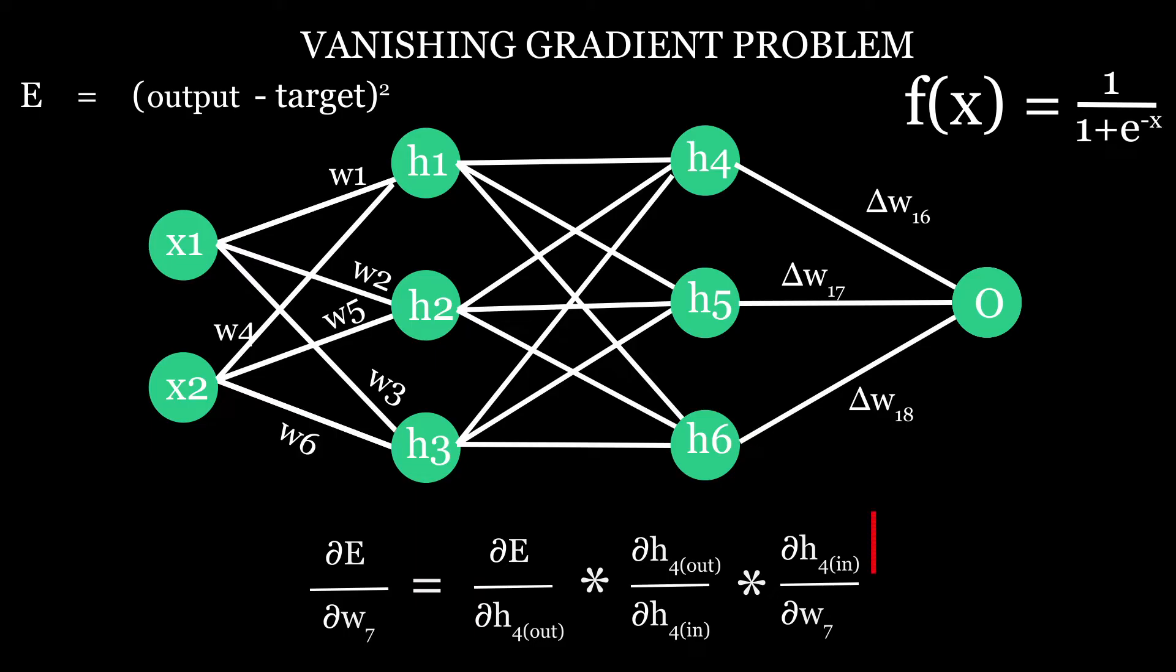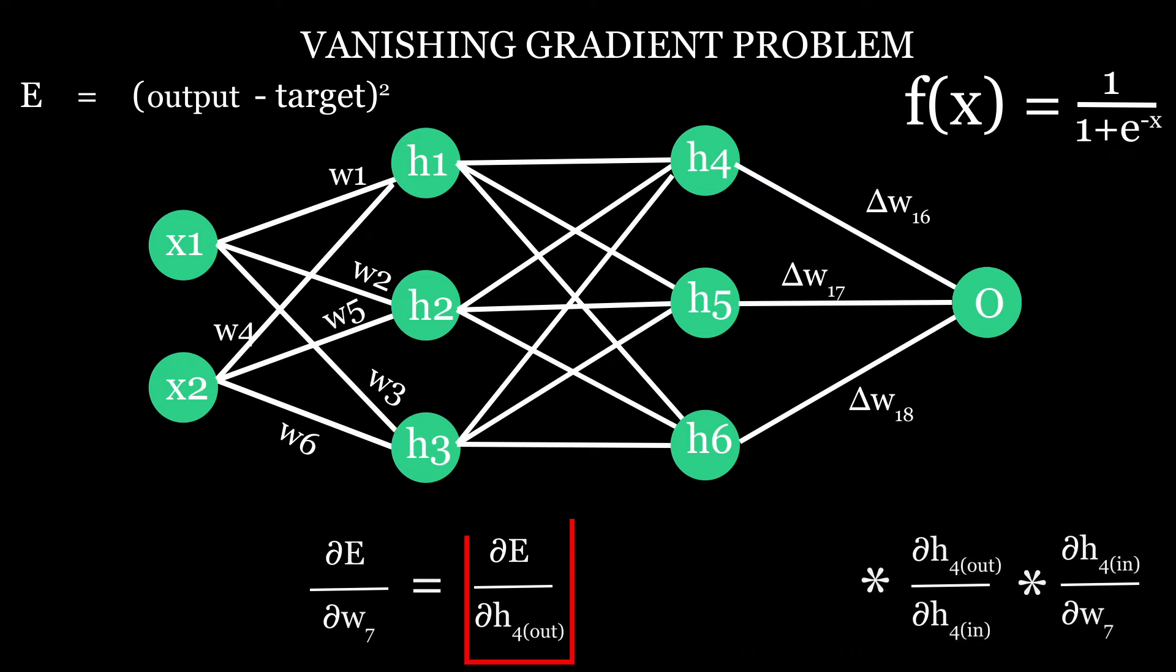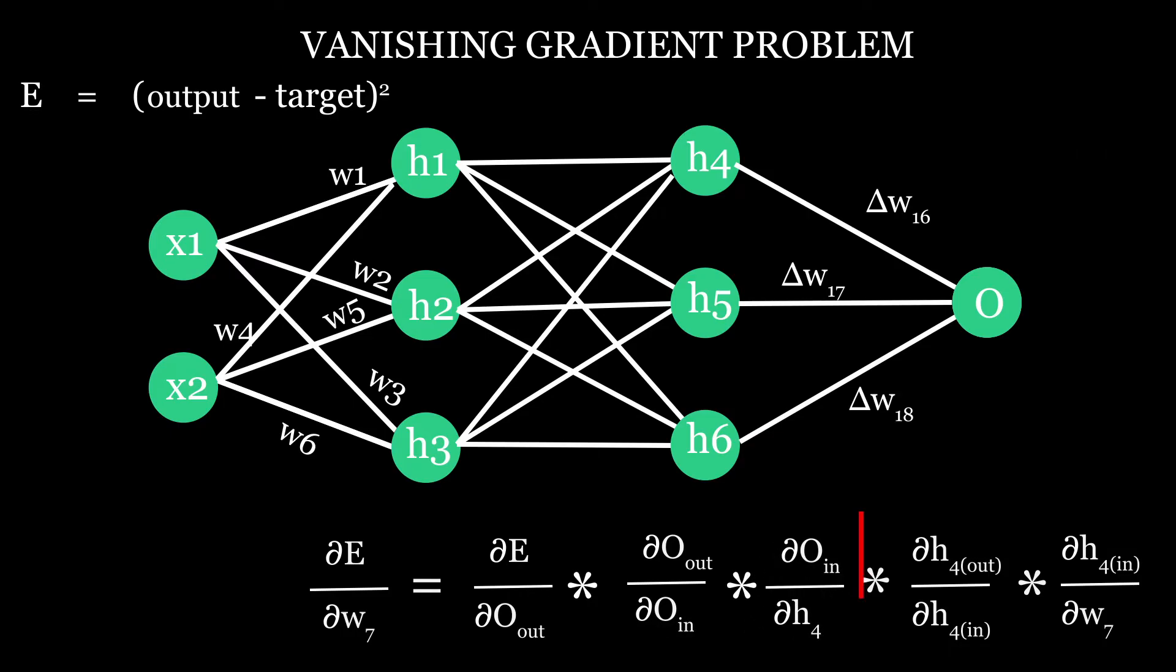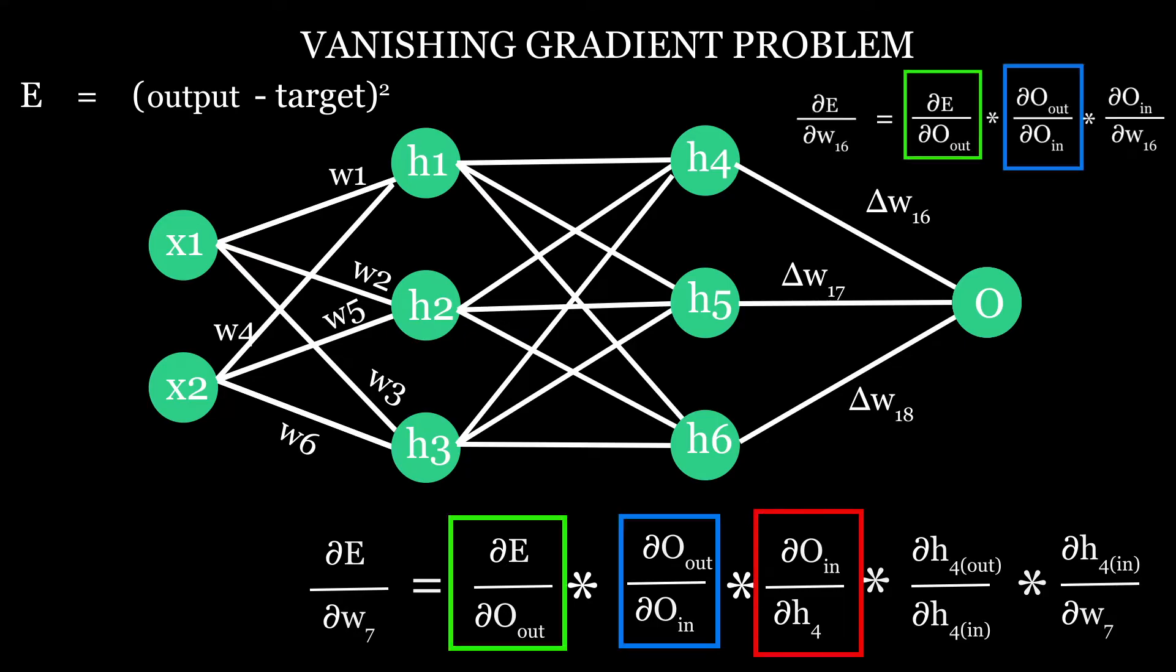So this change occurred due to h1. This change occurred due to activation function, which is sigmoid. So we can take derivative of sigmoid, and we can't calculate change for this directly. Instead, we can calculate change in error with respect to o times how much output at o changed due to input at o times how much input changed due to h4. This is equal to w16 and these two we have already calculated here.